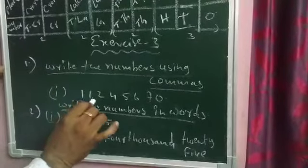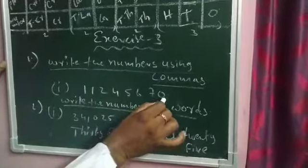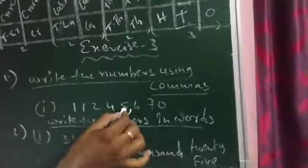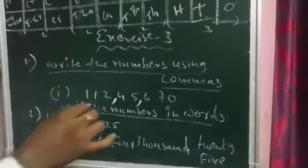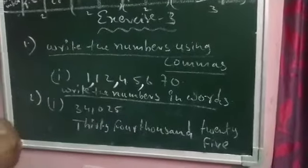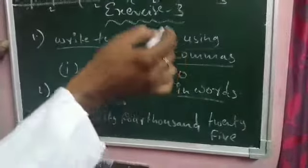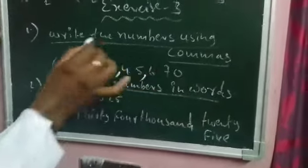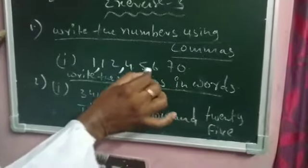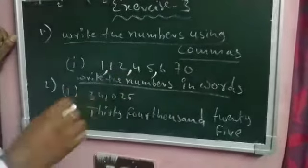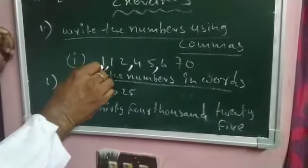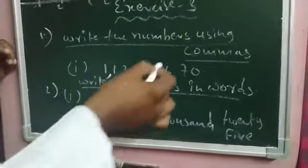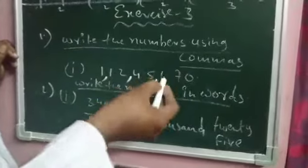For roman numeral one, observe the number given. Arrange the commas from right to left: first three digits, then two digits, then two digits. The commas are always arranged right side to left side. After placing the commas, the number becomes very easy to read — for example, one crore forty-five thousand six hundred seventy. Using commas makes big numbers very easy to read.